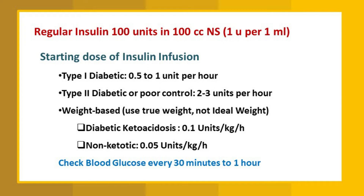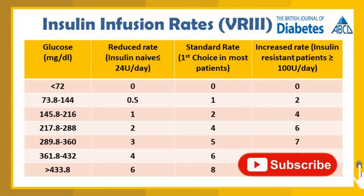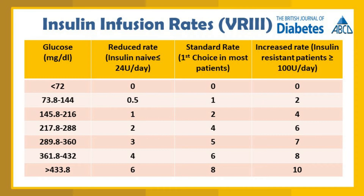After starting the infusion, blood glucose should be monitored every 30 minutes to 1 hour. Insulin sliding scale — also called variable rate intravenous insulin infusion scale — is essentially the same as insulin infusion. There are more than 20 protocols, and every hospital or institution will have their own insulin infusion protocol.